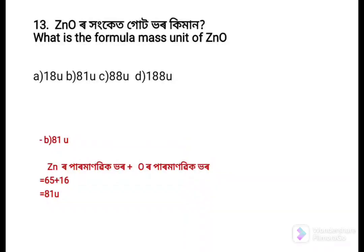Next question: What is the formula mass of ZnO? Option a: 80 u, Option b: 81 u, Option c: 88 u, Option d: 188 u. The answer is Option b: 81 u, because the atomic mass of Zn is 65 u and oxygen is 16 u, so adding them gives 81 u.